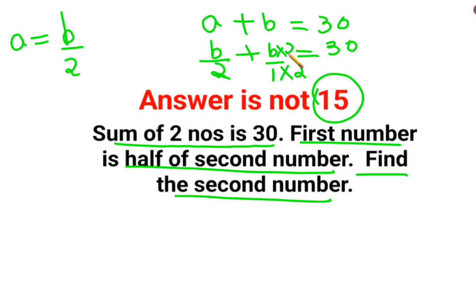Multiply numerator and denominator both by 2. So we are getting B/2 plus 2B/2 equals 30.